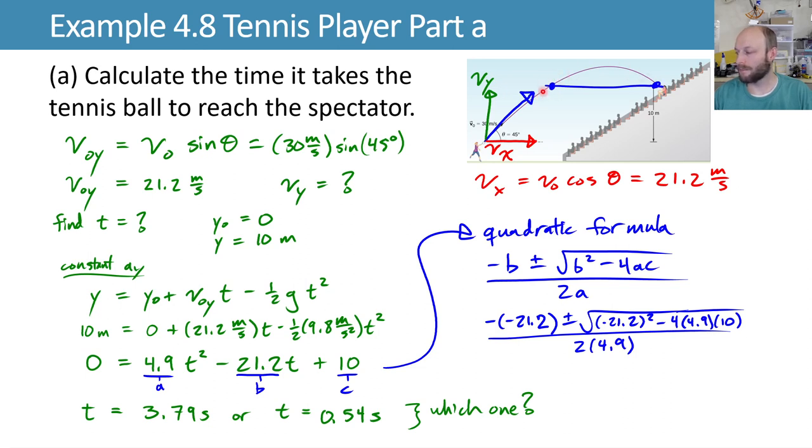So that time on the way up is not going to be the thing we care about, but we care about how long it takes to reach that spectator on the way down. So this first time tells you the amount of time it takes the ball to first reach 10 meters high, and then it goes above there and comes back down. This longer time is the time it takes for the ball to finally reach the person in the stands. So it's the longer time, 3.79 seconds.